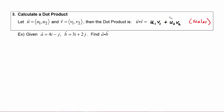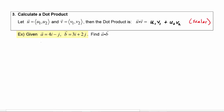Let's give this a try. In this example, vector a is 4i minus j and vector b is 3i plus 2j — notice this is in unit vector notation. We can rewrite these in position vector notation: vector a equals the vector (4, -1) and vector b equals the vector (3, 2).